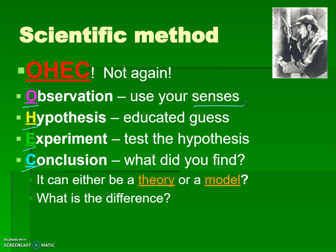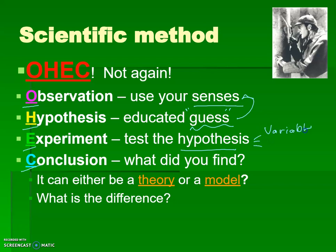You use your senses to gather information. You make this educated guess — which is not the best term, but most people identify with that. It's not a guess; it's based off of what you see and it has to apply to the situation at hand. You test your experiment with different variables: independent, dependent, and control variables. You set up something so that only one thing changes at a time, and then you see what is dependent on that change.